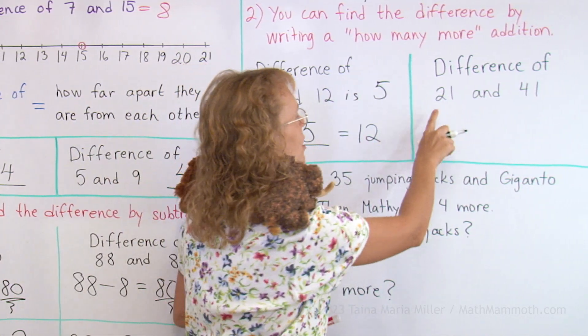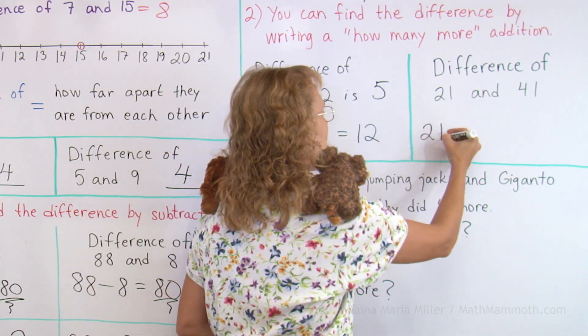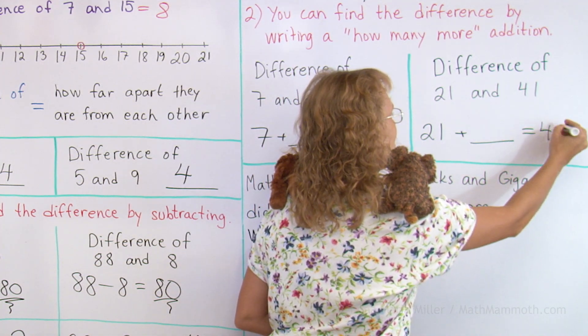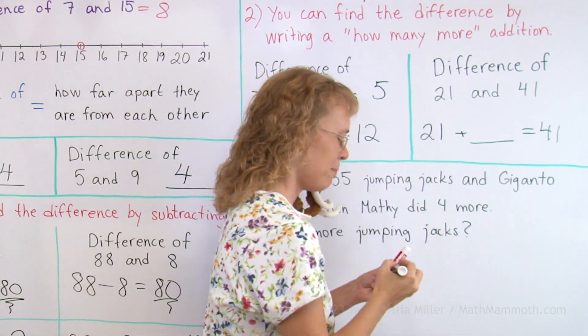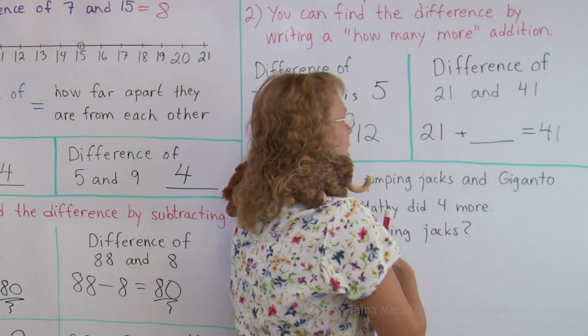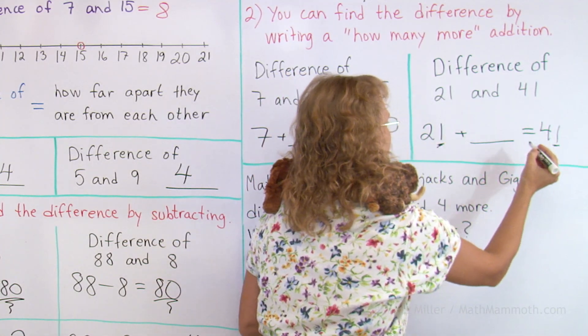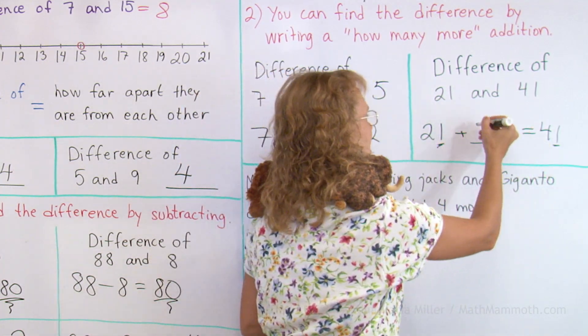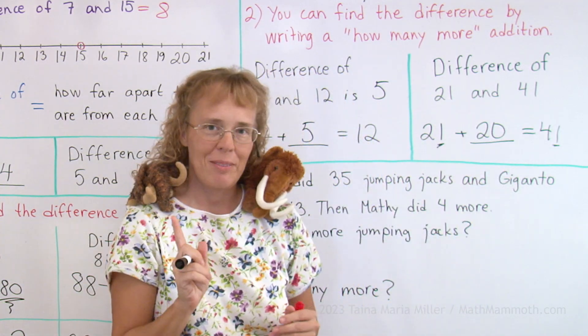The difference of 21 and 41. Again, let me write 21 plus how many more makes 41. Can you solve that one? 21 plus... Look here. There's 1 and 1, and 2 tens and 4 tens. So I will add just 2 whole tens. The difference is 20.